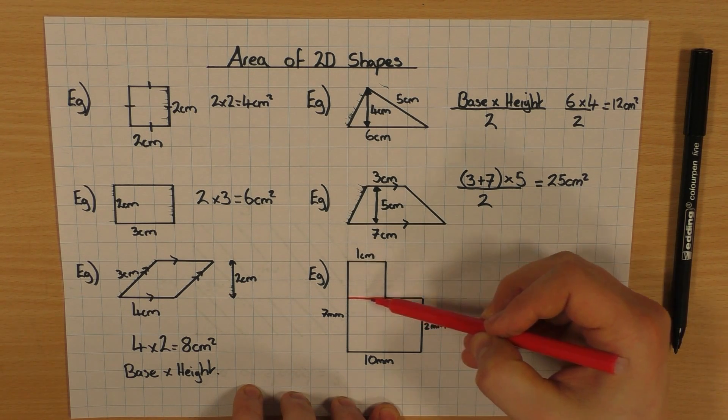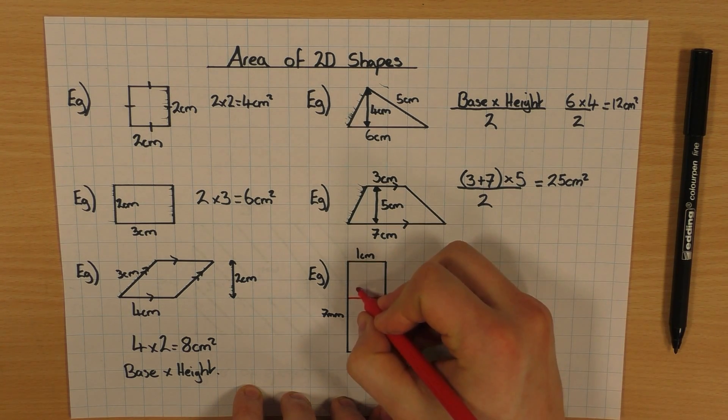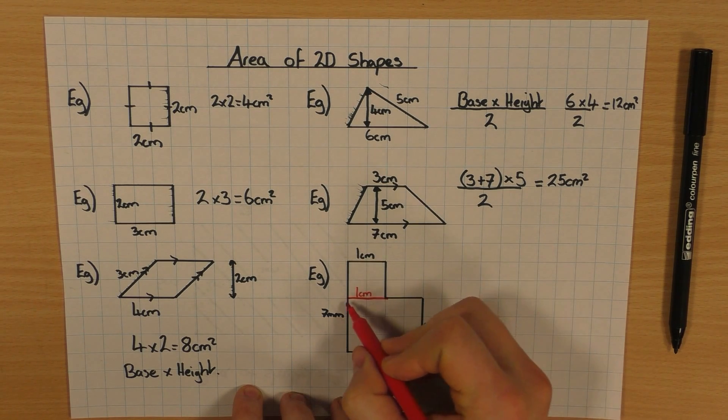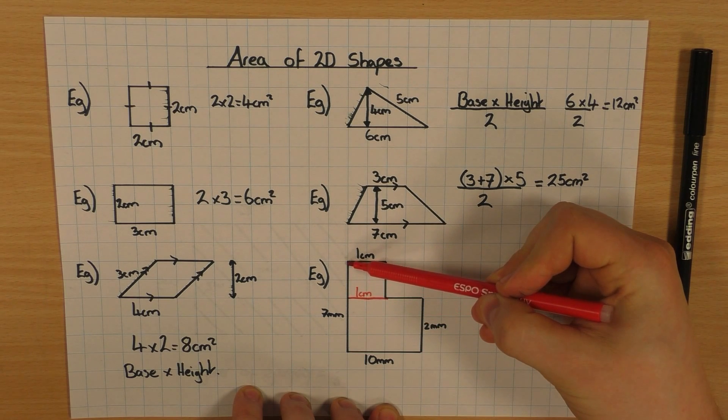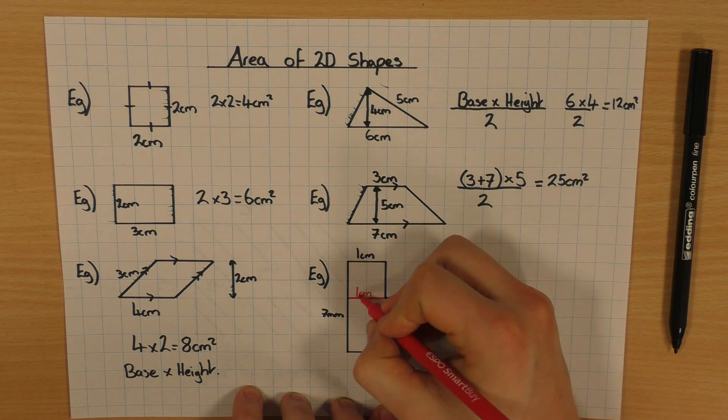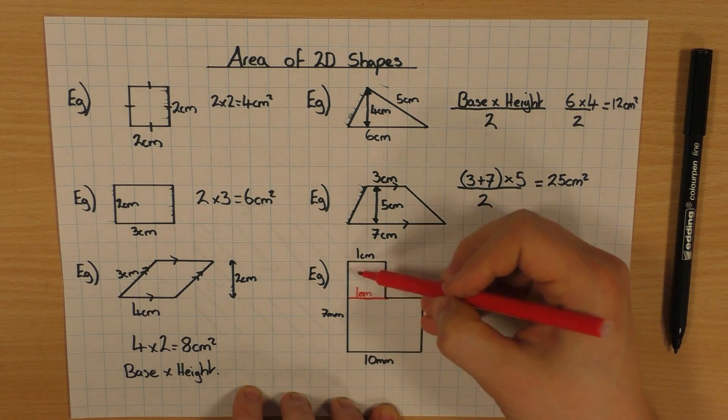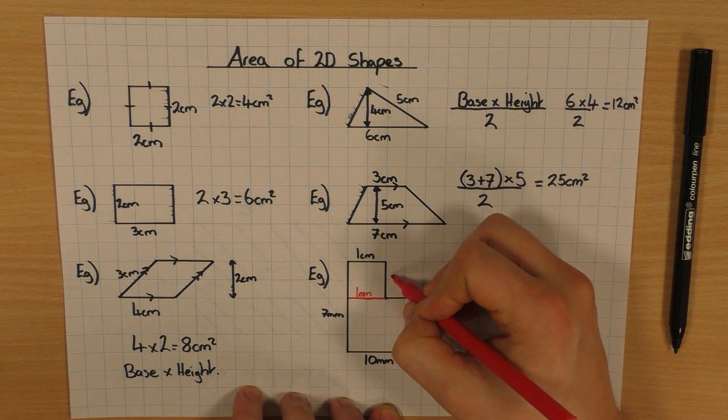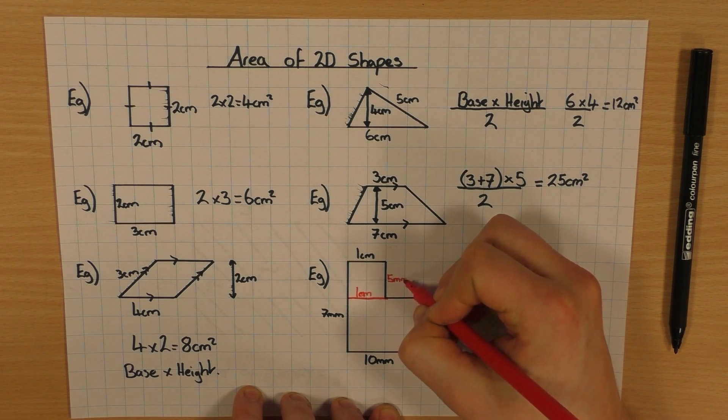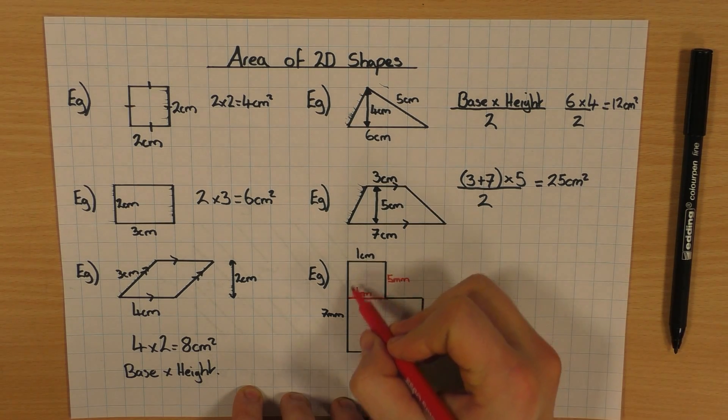So if I need to work out this, that's fine. That's the same as that. So that's 1 centimeter for the base. But I don't know the height. But I do know the whole height of this shape is 7. It's 7, and I know this is 2 millimeters. So this length there, 7, 2, this must be 5 millimeters. So I can work out the area of this.